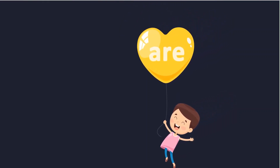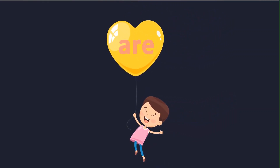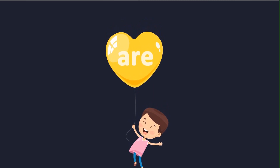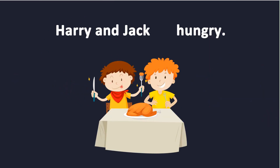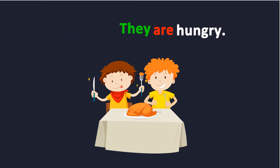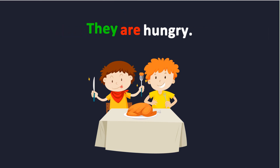What about the last one? Let's learn how to use the verb are. You are clever. The verb are is used with the pronoun you. Harry and Jack are hungry. Harry and Jack are more than one person. We can replace their names with the pronoun they and say they are hungry. The verb are is used with the pronoun they.